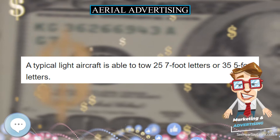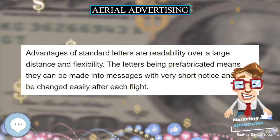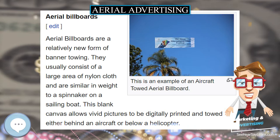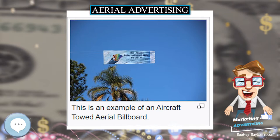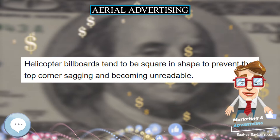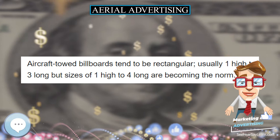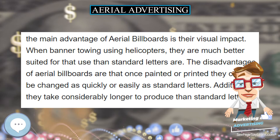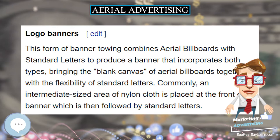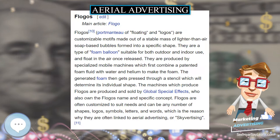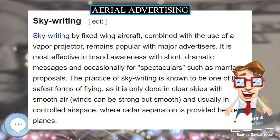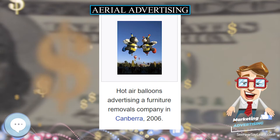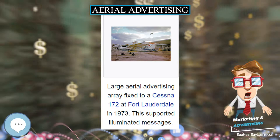Banner towing is a form of skywriting where a banner is towed or dragged behind an aircraft. The banner itself can be of three types. Standard letters consist of a series of either 5-foot-high or 7-foot-high letters connected together by joints designed for interchangeability, and have been the predominant form of banner towing for past decades. 7-foot letters have the advantage of greater readability over a long distance, but incur a large drag penalty on the towing aircraft. 5-foot letters trade off some readability for the ability to tow longer messages. A typical light aircraft is able to tow 25 7-foot letters or 35 5-foot letters. Advantages include readability over a large distance and flexibility, as the letters being prefabricated means they can be made into messages with very short notice and changed easily after each flight.